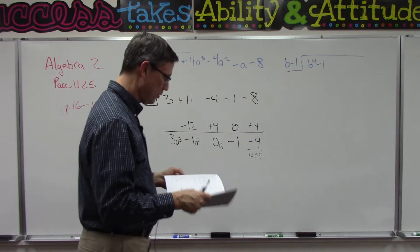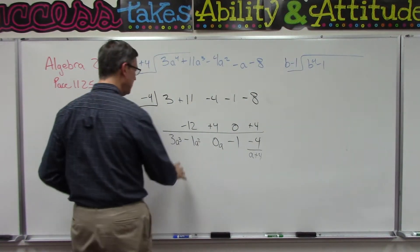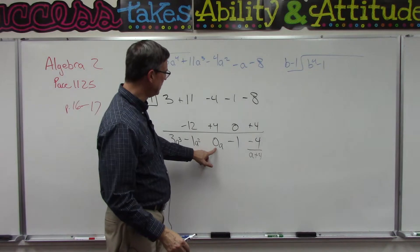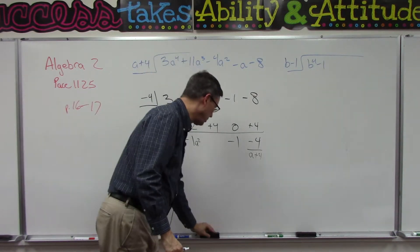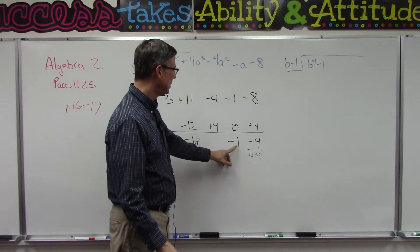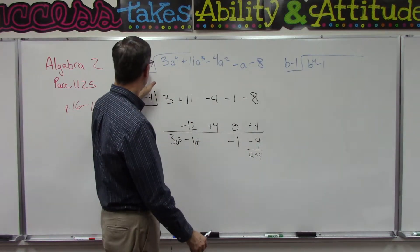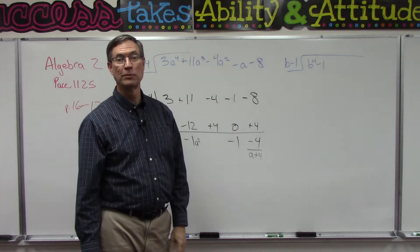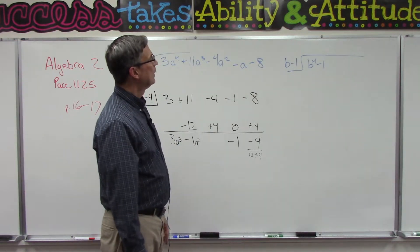The only thing different in the final answer is that because this is 0 times a, we don't put it in the answer. So we're going to have this term, this term, the constant, and then we just tack on negative 4 over the original divisor a plus 4.